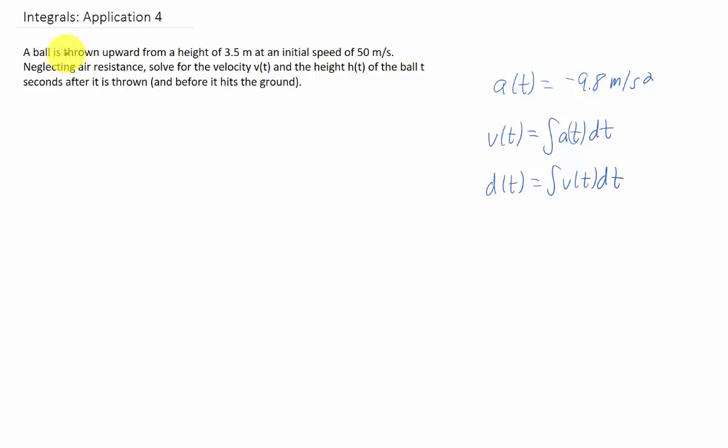Another application problem. This time a ball is thrown upward from a height of 3.5 meters at an initial speed of 50 meters per second. We're neglecting air resistance and solving for the velocity and the height of the ball t seconds after it's thrown. And of course, this function that we come up with is only going to be valid before the ball hits the ground.